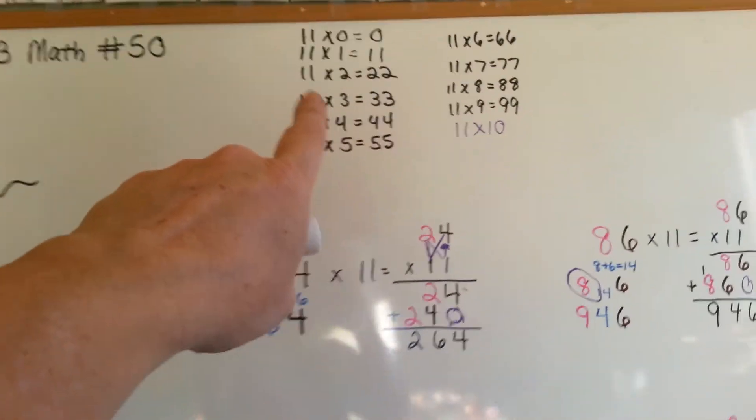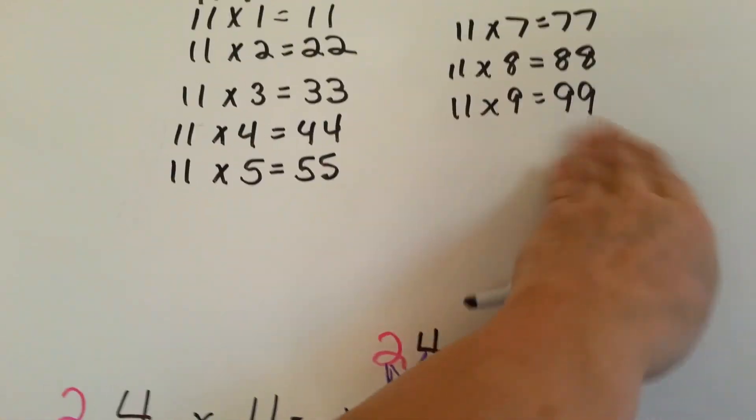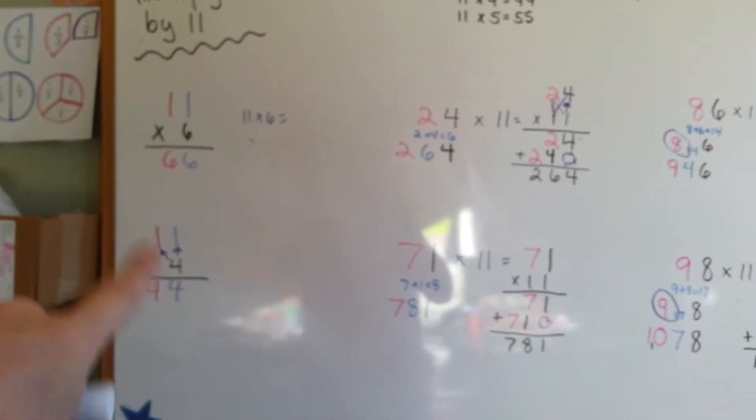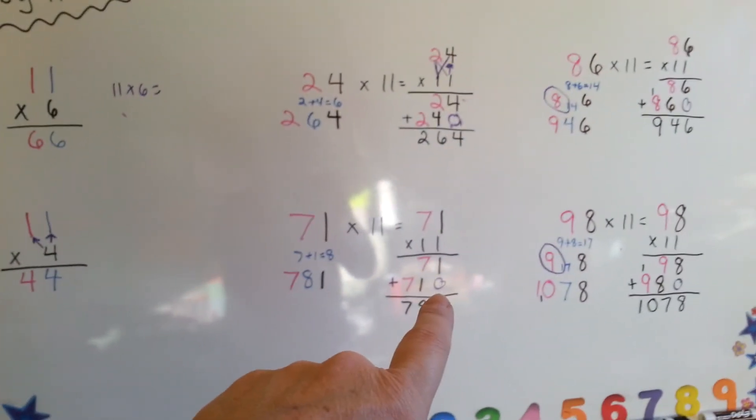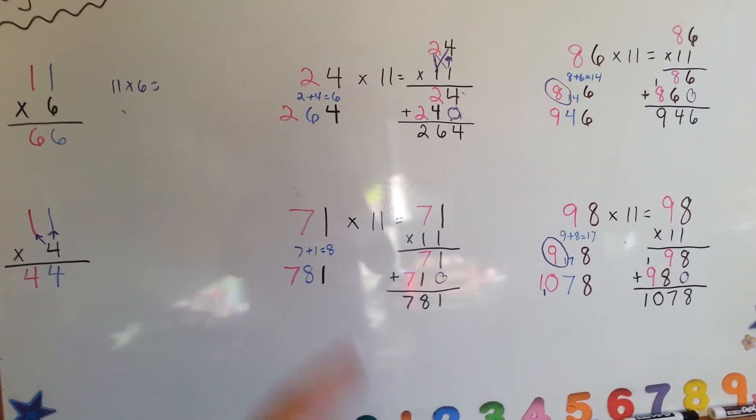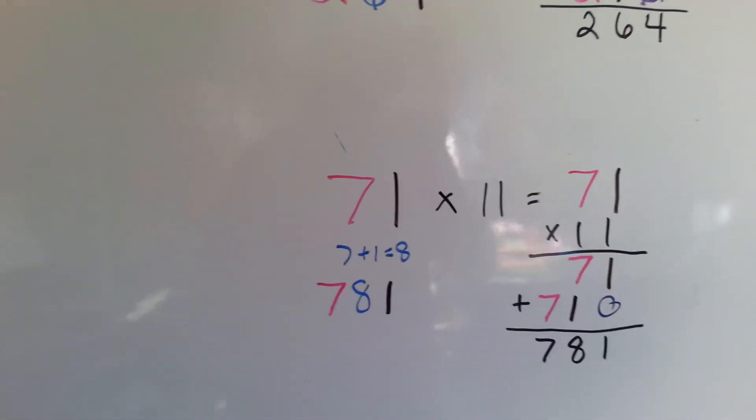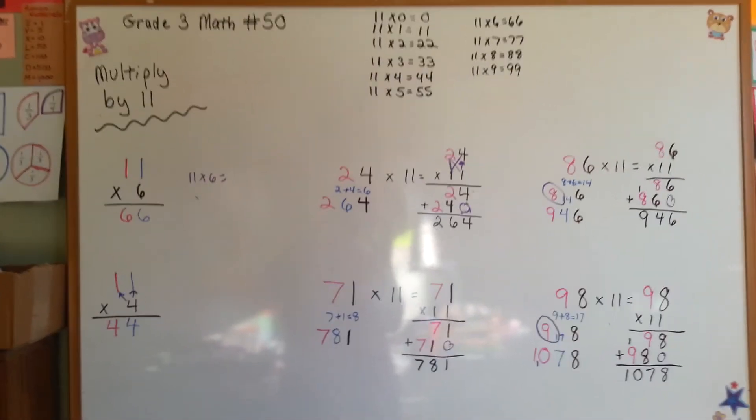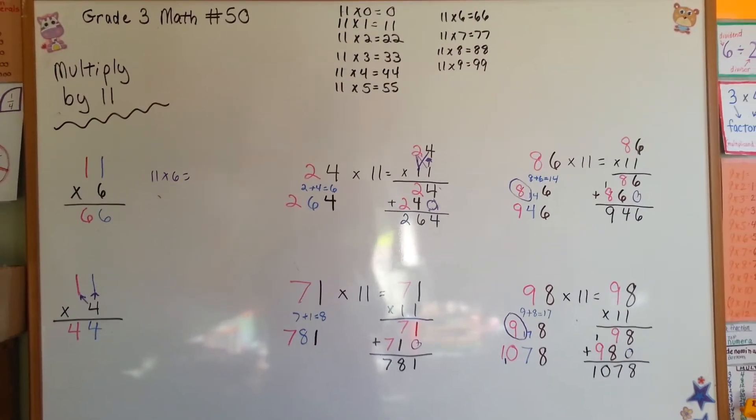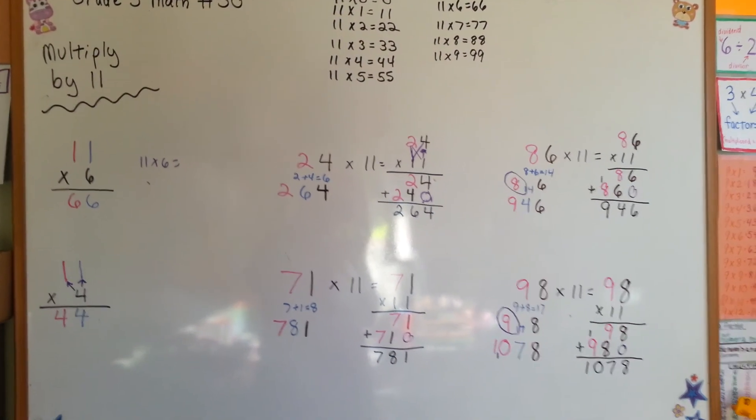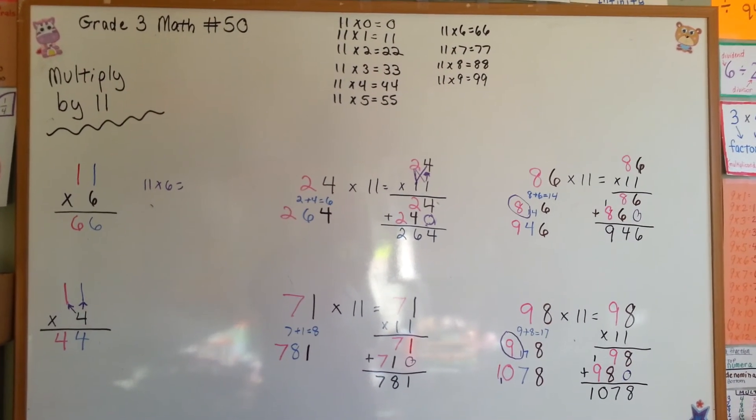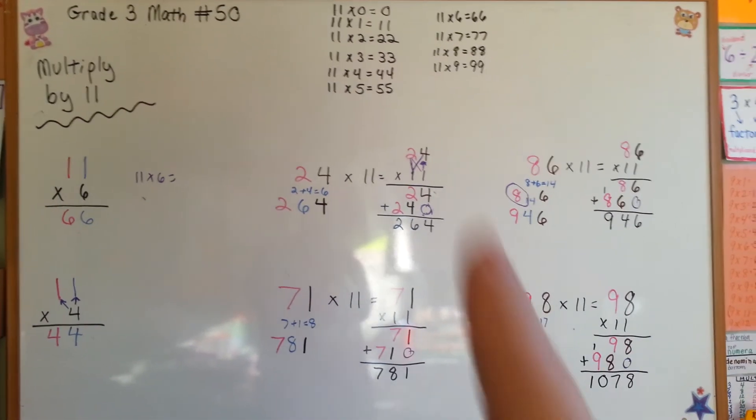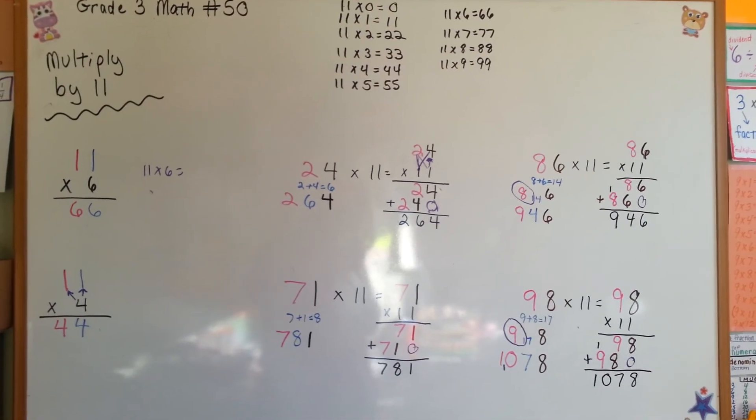These times tables are very easy to memorize because you just double the number. Remember how we did the stacked way and how it took its turn. Remember how we put the placeholder there. But also remember my trick. Show this video to your friends. Maybe you could do this in your head and do mental math and surprise people. Say give me any number times 11 and I'll do it. You're doing a good job. Keep trying to memorize your times tables. And I'll see you next time.